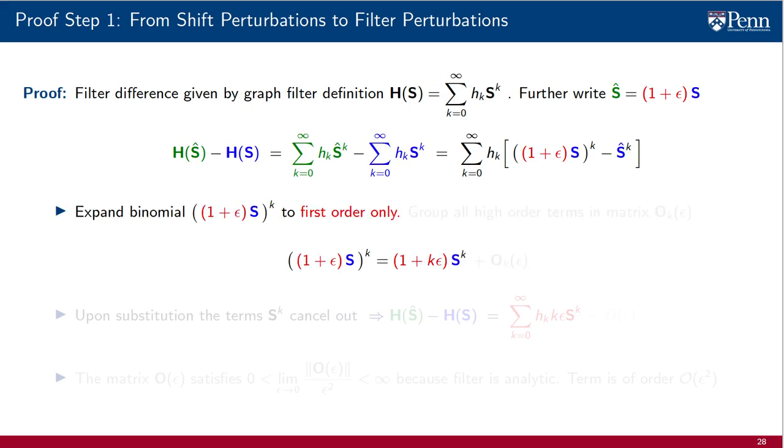We now expand the binomial term involving the perturbed shift, but we perform the expansion to first order only. Thus, (1 + ε) to the power of k is replaced by 1 + kε as dictated by the first order approximation of a binomial. All other terms of the binomial expansion are grouped in the matrix O.